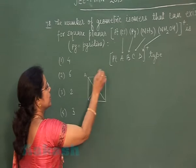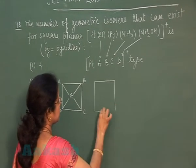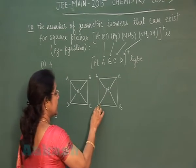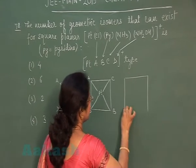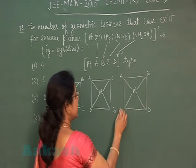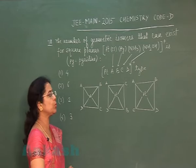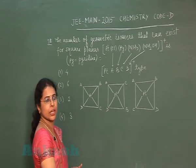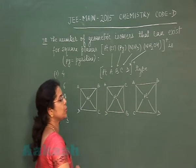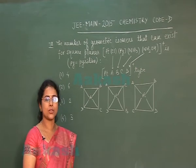When all four ligands are different, there are three possibilities for geometric isomers. First possibility: A trans to C, with B and D on the other positions. Second possibility: A trans to B, with C and D. Third possibility: A trans to D, with B and C. These three arrangements are the three distinct geometric isomers. They are referred to as geometric isomers, not cis-trans isomers.